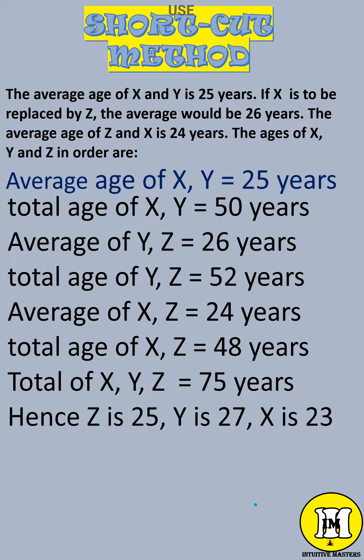Total of X, Y, and Z equals 75 years. Hence Z is 25, Y is 27, X is 23.